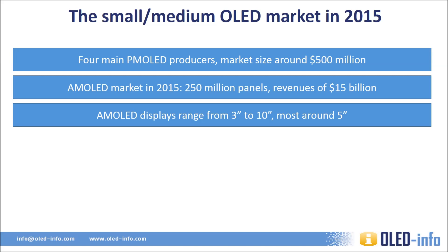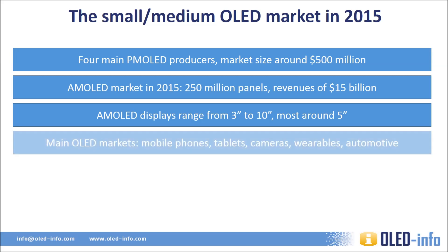AMOLED displays on the market range from about 3 inch to 10 inch in size. Most of the AMOLEDs being produced are used in mobile phones and are about 5 inch in size. Popular OLED applications include smartphones, tablets, digital cameras, wearables, and displays used in automobiles, which are currently mostly passive matrix ones, but AMOLEDs will enter this market soon. Popular OLED devices include smartphones from Samsung and Motorola, and smartwatches from Apple, Samsung, and LG.